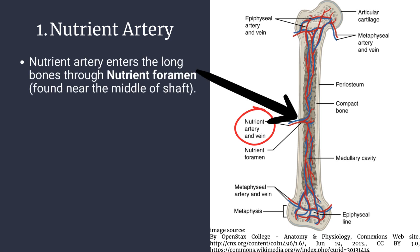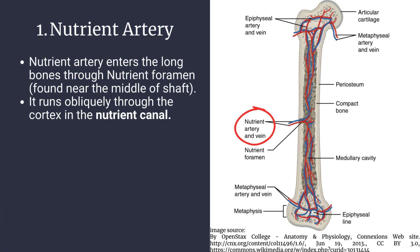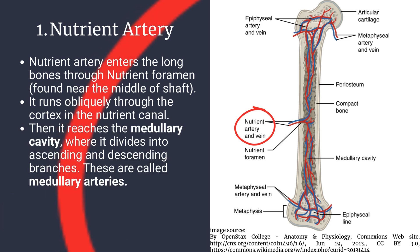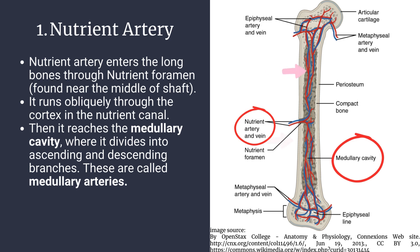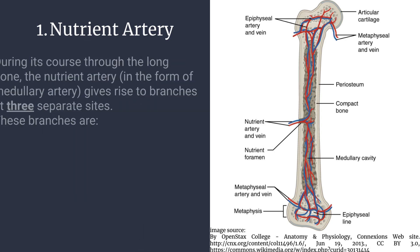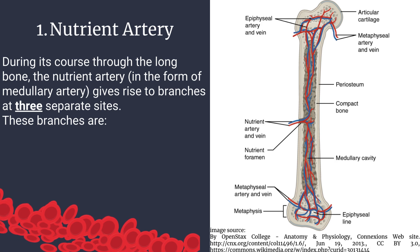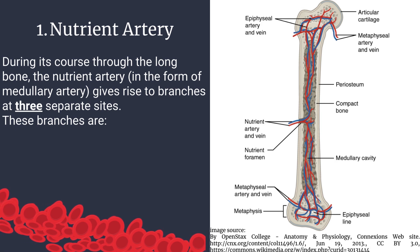Number one: nutrient artery. The nutrient artery enters the long bone through the nutrient foramen, found near the middle of the shaft. It runs obliquely through the cortex in the nutrient canal, then reaches the medullary cavity where it divides into ascending and descending branches, called medullary arteries.